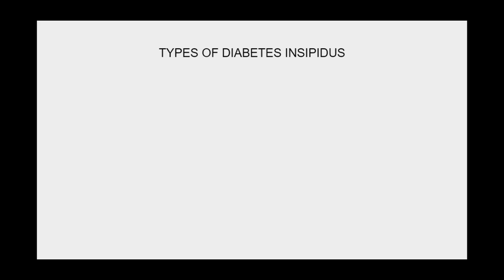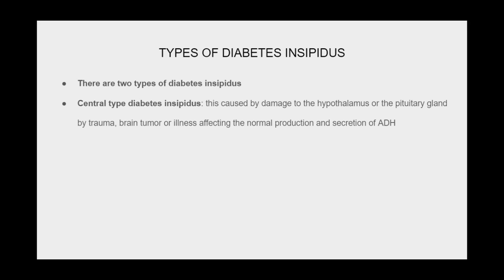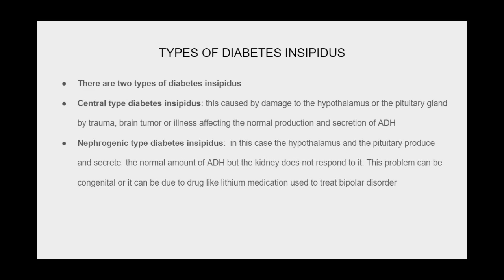There are two types of diabetes insipidus. Central type diabetes insipidus is caused by damage to the hypothalamus or pituitary gland by trauma, brain tumor, or illness, affecting normal ADH production and secretion. Nephrogenic type diabetes insipidus occurs when the hypothalamus and pituitary produce and secrete normal amounts of ADH but the kidneys do not respond to it. This problem can be congenital or caused by drugs like lithium, a medication used to treat bipolar disorder.